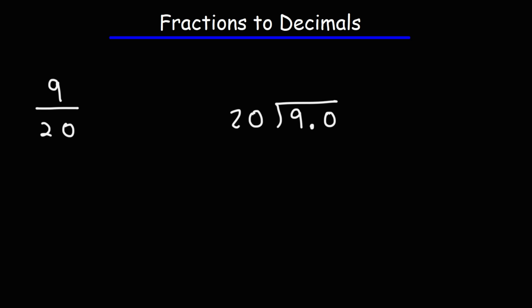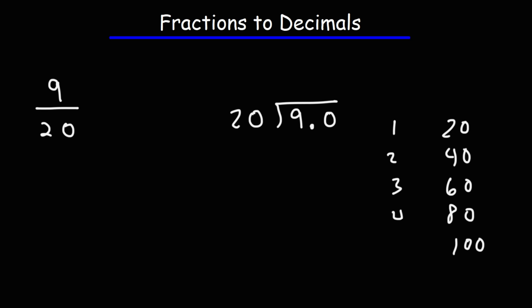How many times does 20 go into 90? If we make a list, we have 20, 40, 60, 80, 100, and so forth. 100 exceeds 90. 80 is the highest multiple of 20 below 90. So 20 goes into 90 four times. 20 times 4 is 80. Now let's not forget the decimal point.